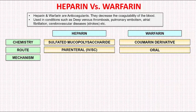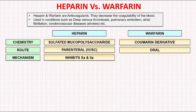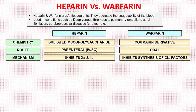Next, we move to the mechanism of action. Heparin inhibits the clotting factors 10A and 2A by forming complexes with them. Warfarin, on the other hand, inhibits the synthesis of vitamin K dependent clotting factors in the liver, such as factors 2, 7, 9, and 10.